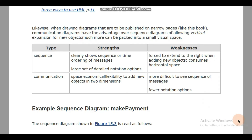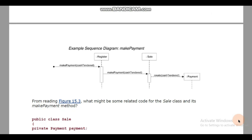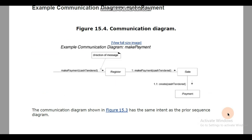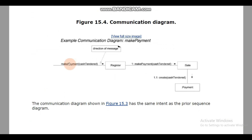Let's look at the example we have discussed. We first saw this as a sequence diagram — a message was sent from an unidentified sender, then payment was created. Now let's look at the same scenario as a collaboration diagram or communication diagram. We use arrows to show the direction of the message. The first message was 'make payment' which came from an unidentified sender, then the message moved to the next object which is sale, and then to the next object.